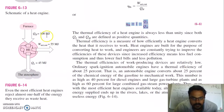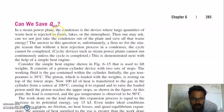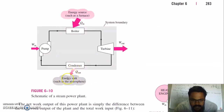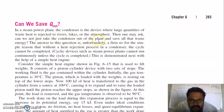Good morning. Today we will start with second hour thermodynamics. The question here is: we had lost this amount of energy to the atmosphere. Can we save this energy? Can a heat engine work without the loss of this energy? In a steam power plant, the condenser is the device where large quantities of waste heat are rejected to rivers, lakes, or the atmosphere. One may ask: can we not just take the condenser out of the plant and save all the waste energy? The answer is unfortunately a firm no, for the simple reason that without a heat rejection process in a condenser, the cycle cannot be completed. Cyclic devices such as steam power plants cannot run continuously unless the cycle is completed.